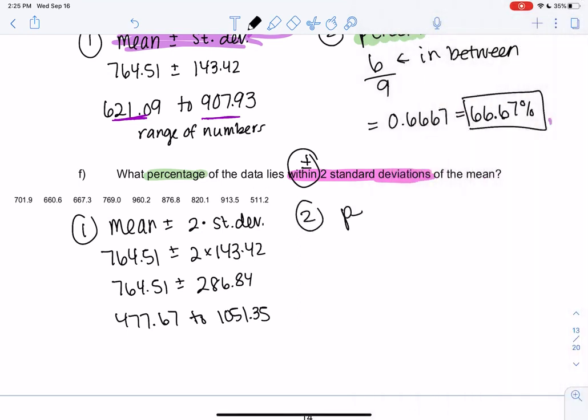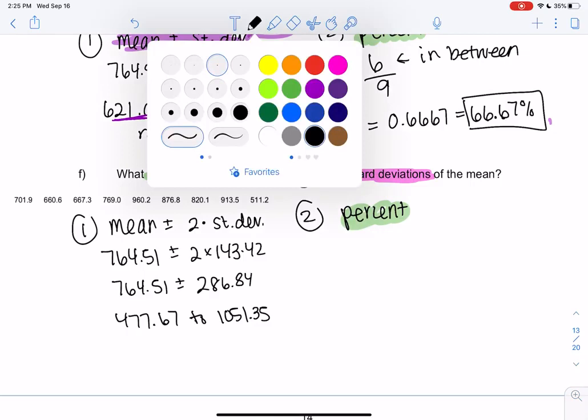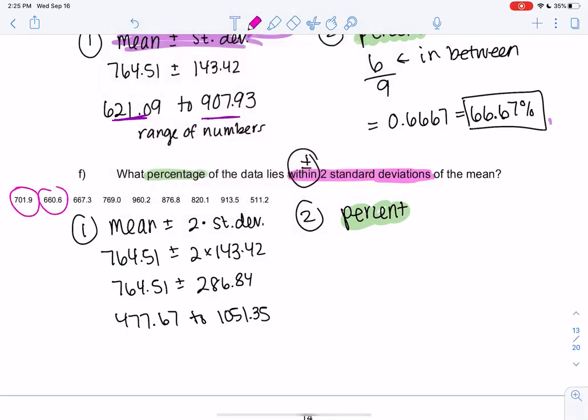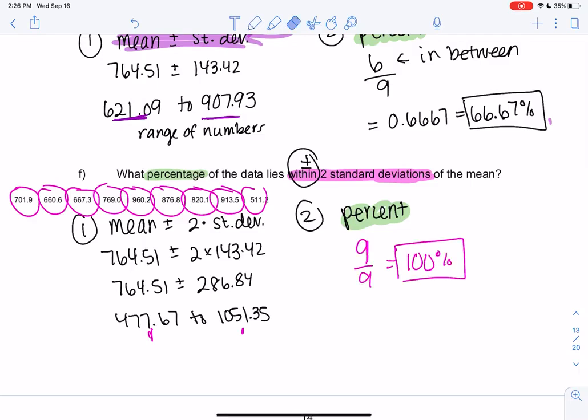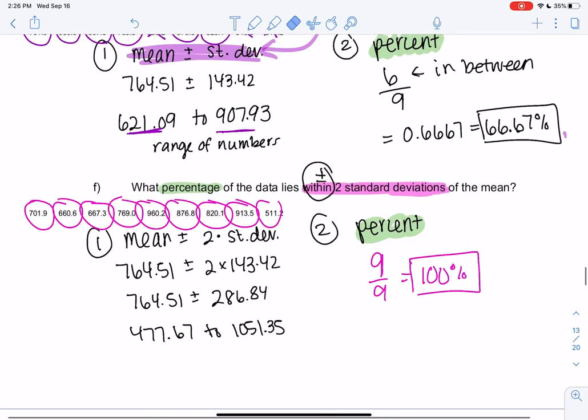And then we can go ahead and calculate the percent. So I'm going to go through the numbers and see which ones are within this range. So 701, 660, yeah, as I go through it, looks like every single number is in between these two numbers. So that would be 9 out of 9 or 100%. So we'll see later in section 3.5 the significance of these percents, but just practicing a little bit of algebra now. So that's it.